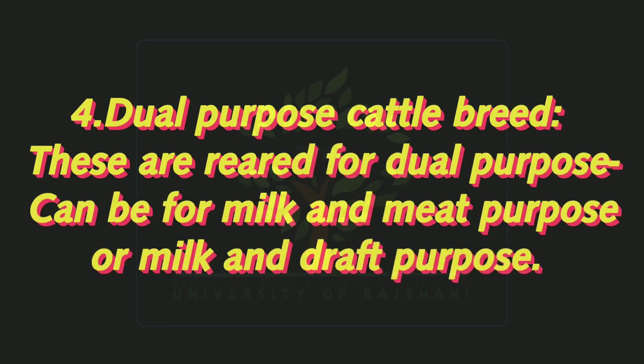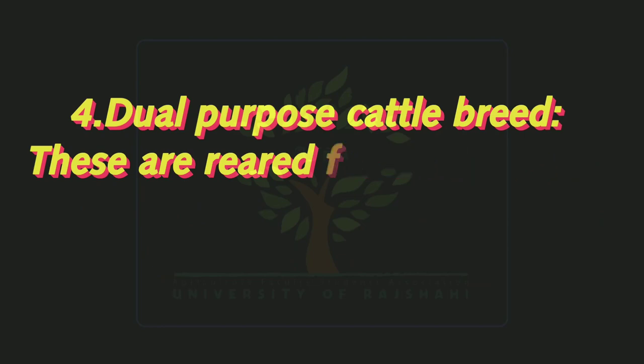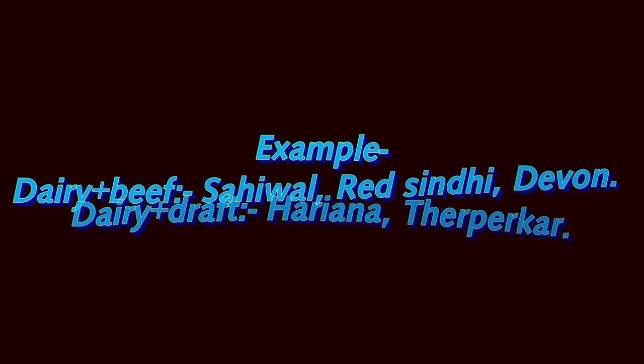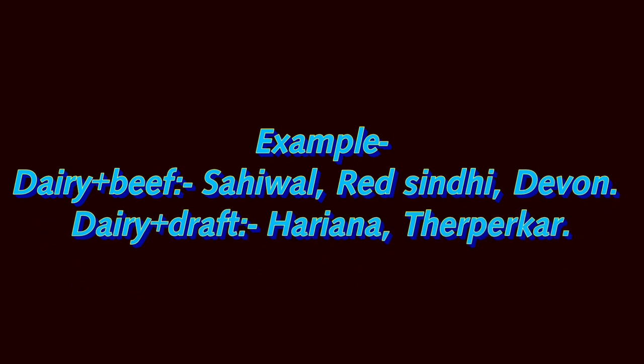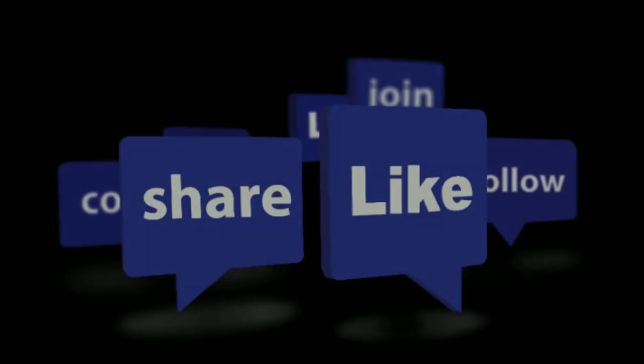Number four: dual purpose cattle breed. These are reared for dual purpose — either milk and meat, or milk and draft. Examples of dairy plus beef type include Charolais and Devon; dairy plus draft type include Haryana and Tharparkar.